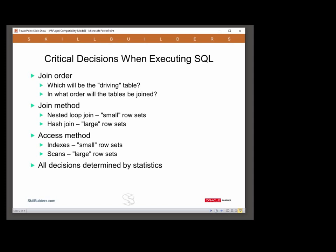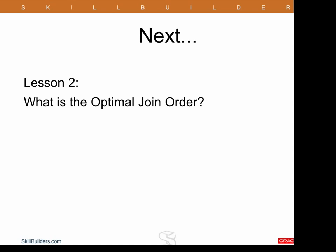Having worked out the join method, it then moves on to the access method. Small row sets will probably use index-driven access paths; larger row sets will probably use scan-based access paths. All these decisions are determined by statistics — object statistics and system statistics. But the most important decision is always join order.